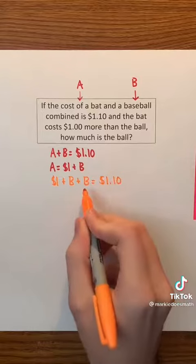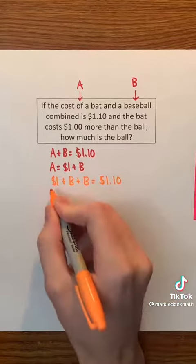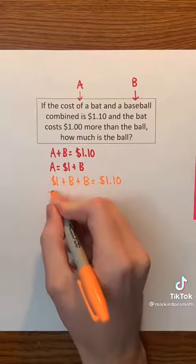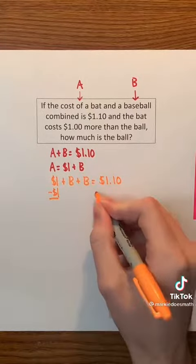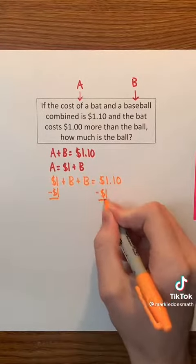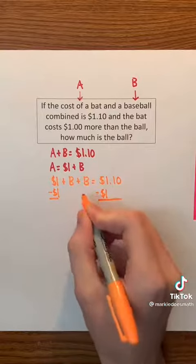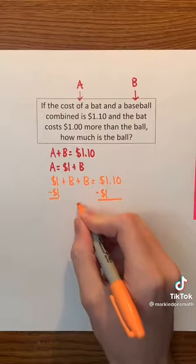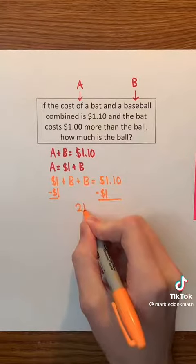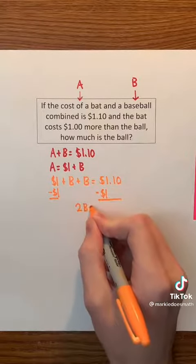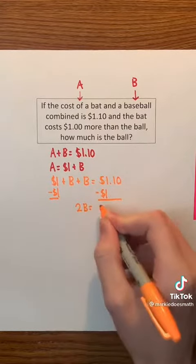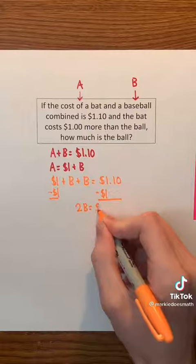Now we can actually solve for B by first subtracting $1 on both sides. The $1s cancel out and B plus B is 2B. On the right side, after subtracting, we get $0.10.